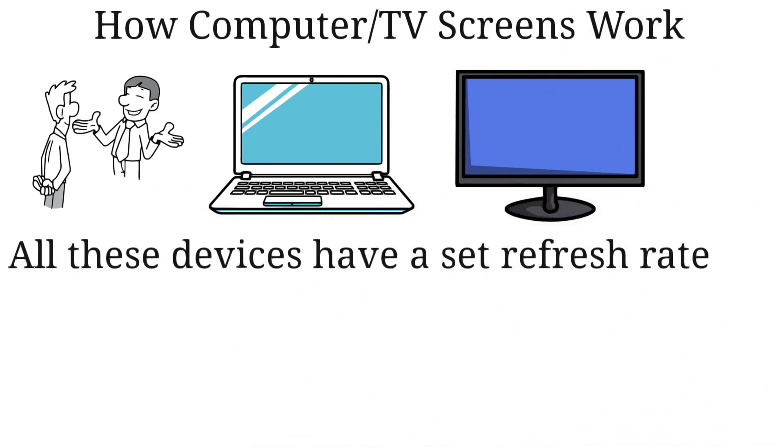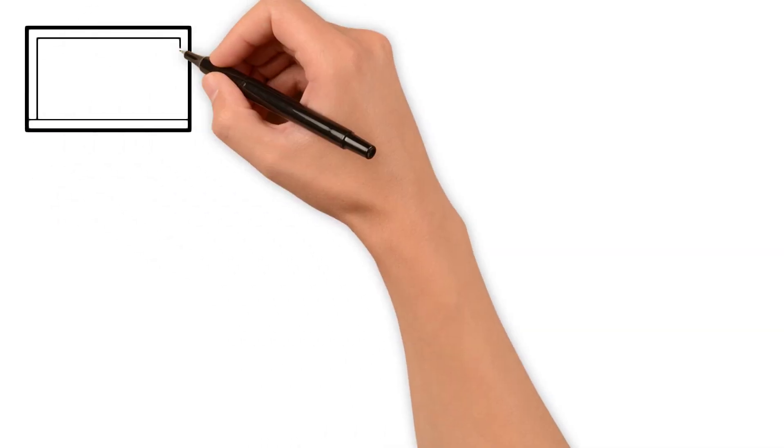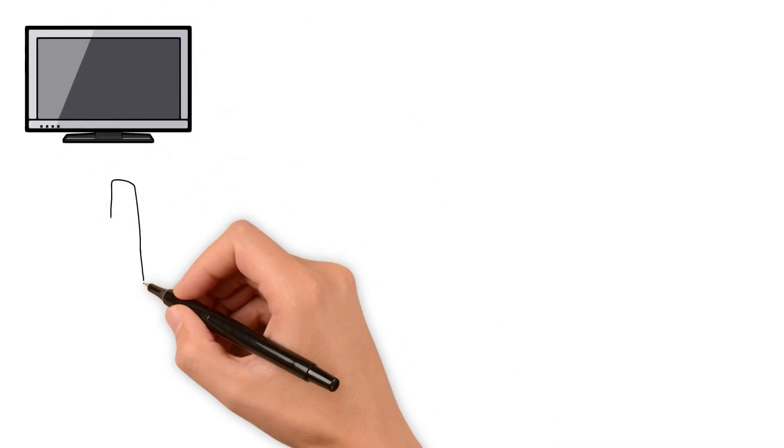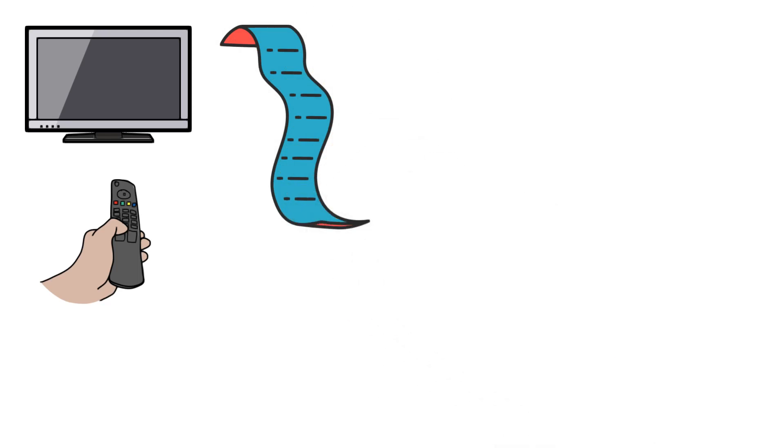All these devices have a set refresh rate, ranging from 50Hz on older devices to up to 360Hz on newer high-end monitors and TVs. The refresh rate is basically how often the device is able to change the image of your screen per second. This varies on many different factors, and nowadays the most common refresh rates are as follows.